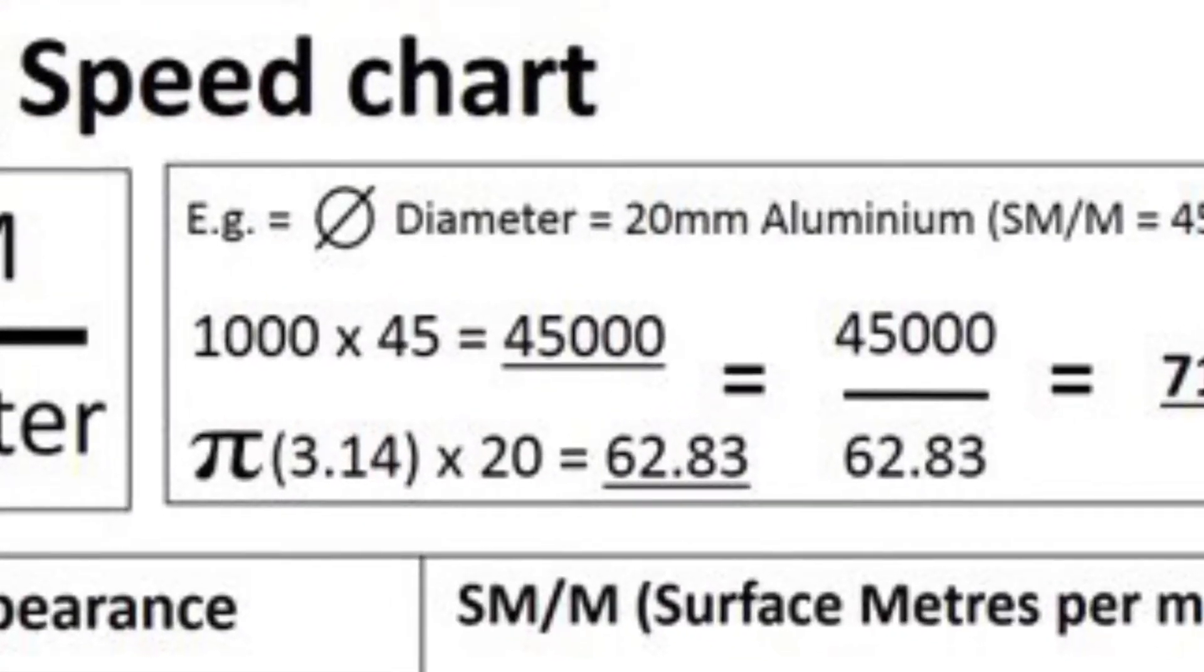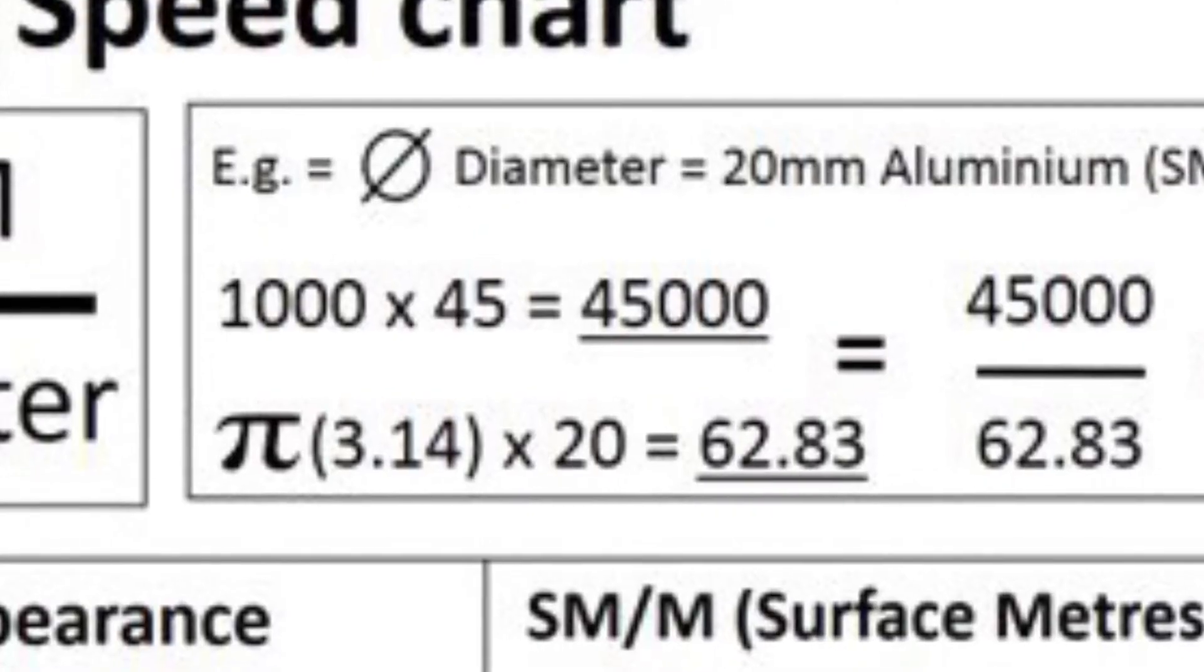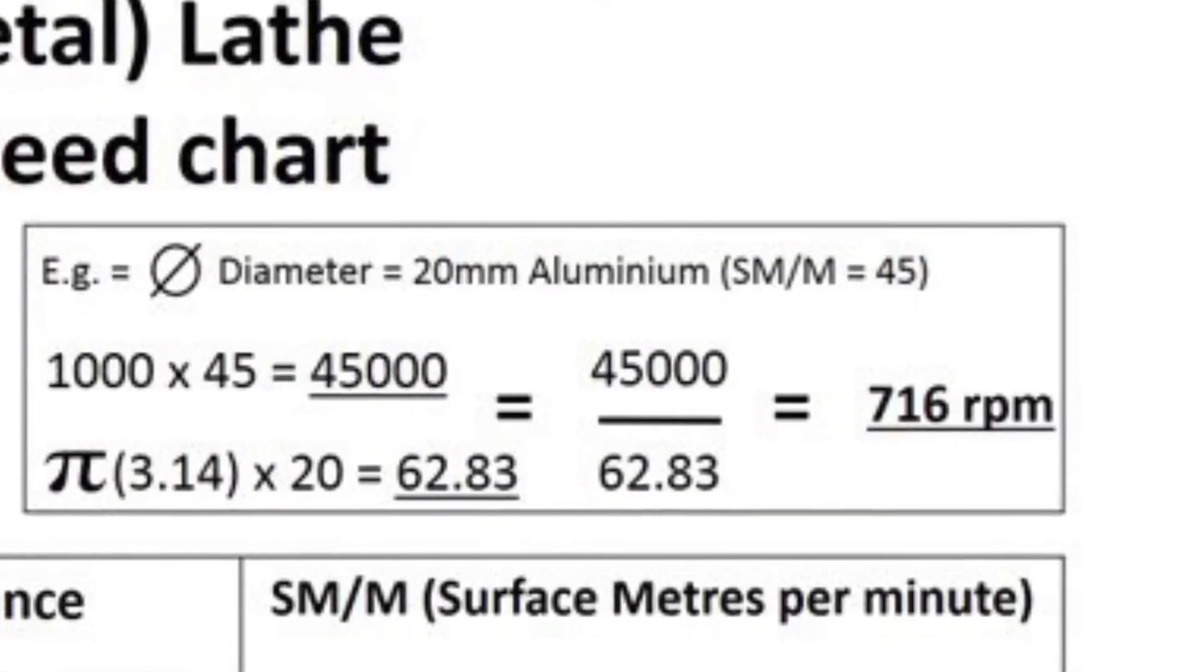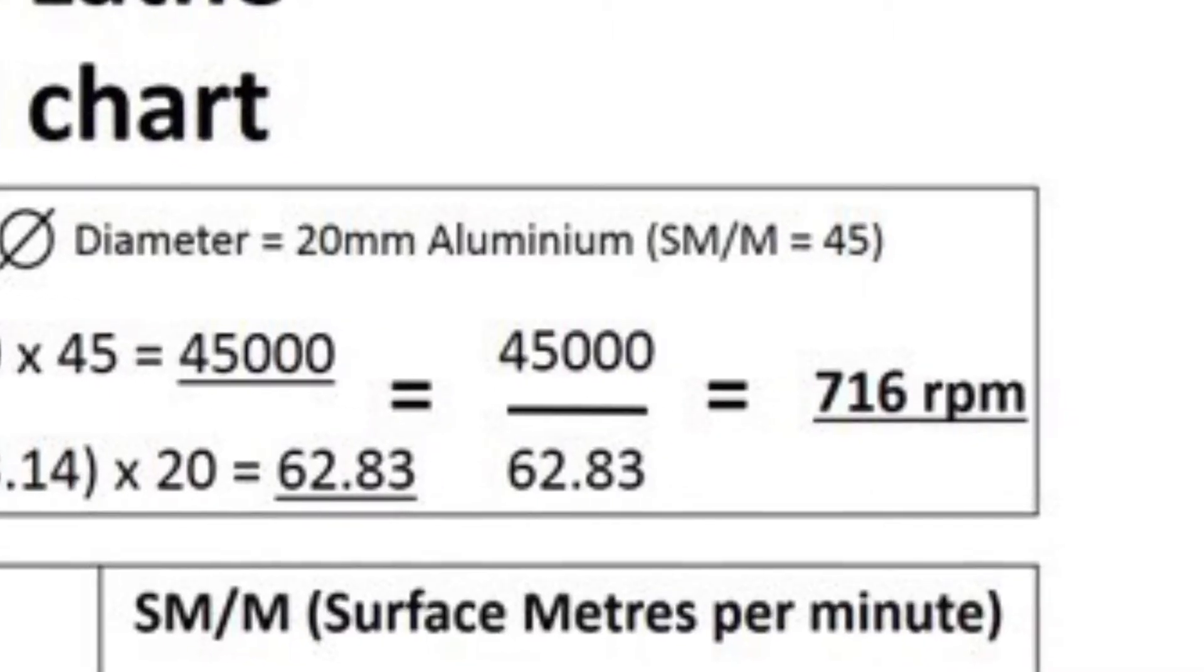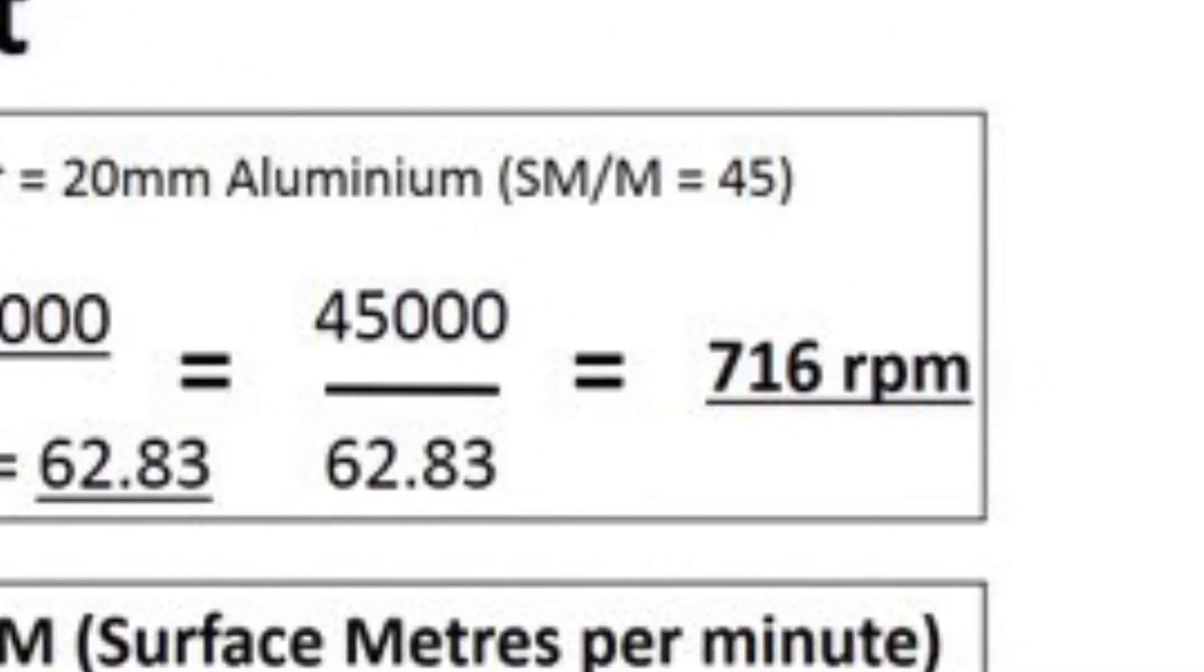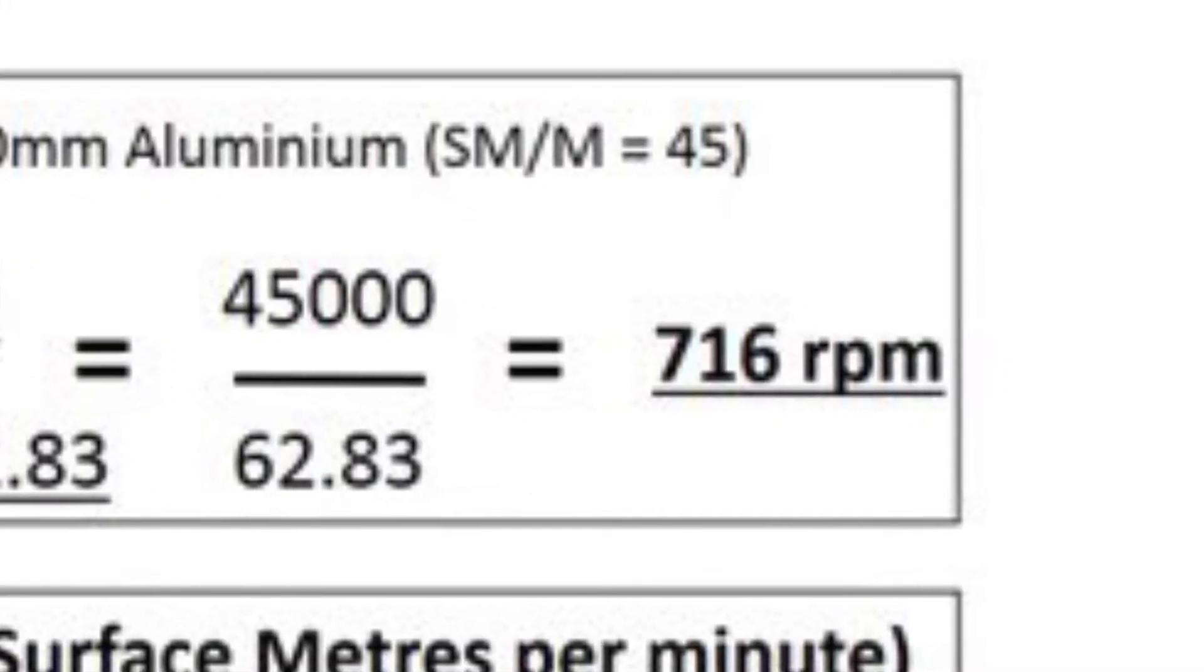Pi, 3.14, times the material's diameter of 20 equals 62.83. 45,000 divided by 62.83 gives a three-jaw chuck turning speed of 716 RPM.